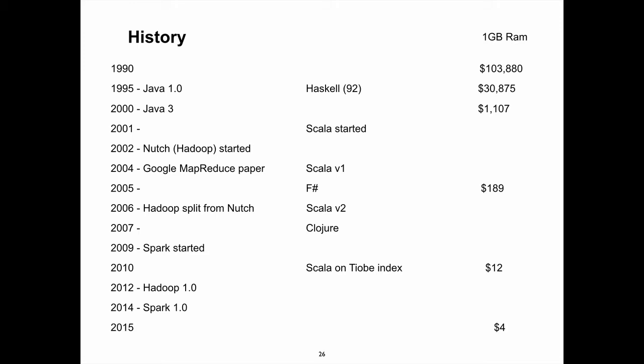When Scala and Spark were being developed, there were two important trends happening that affected Hadoop. One, as we talked about a week ago, the price of RAM really decreased — it was a tremendous decrease — and that really affected how Hadoop and Spark's development goals were shaped.